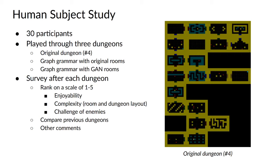A human subject study was conducted, made up of 30 participants who played through three dungeons: the original dungeon number 4, a graph grammar generated dungeon with original rooms, and a graph grammar dungeon with GAN-generated rooms. After each dungeon they were asked to rank it on a scale of 1 to 5 in terms of enjoyability, complexity, and challenge of enemies. After playing all three, they were asked to compare the dungeons to one another and provide any additional comments. This study was conducted to see if our graph grammar GAN dungeons were comparable to the original dungeon.